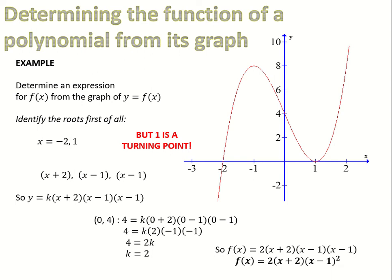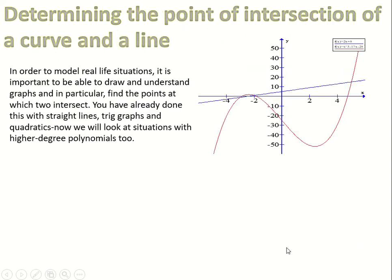You could simplify x minus 1 times x minus 1 as x minus 1 squared — you won't lose or gain any marks for doing so. And in reverse: if you see x minus 1 squared in an equation, it tells you the graph has a turning point on the x-axis at x equals 1.